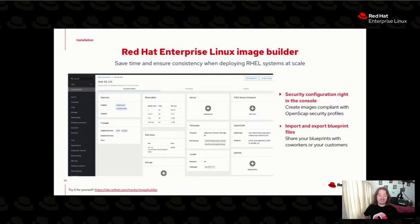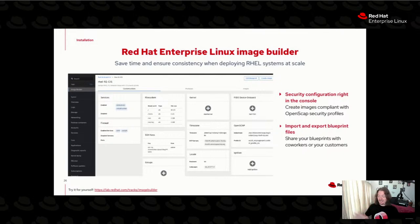Probably the next coolest feature is the ability to import and export Blueprint files. You can build an Image Builder Blueprint — basically a TOML file — upload it into a Git repository for version control, and tie it into CI/CD pipelines. You can define your company's golden image, export that TOML file, and give it to all of your development team so they can spin up an official virtual machine that exactly matches production and do their development against that platform.